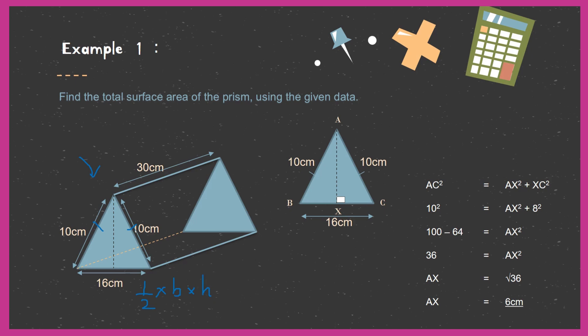Since we do not know the height, we apply Pythagoras' theorem. Taking the points as A, X, and C, where the right angle is at X, we have: AC² = AX² + XC². Substituting AC equals 10 cm: 10² = AX² + 8². Moving 64 to the other side gives AX² equals 36, so AX equals the square root of 36, which is 6 cm. Now we know the height of the triangle is 6 cm.